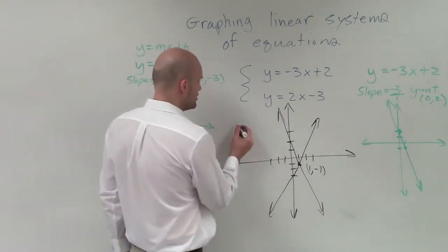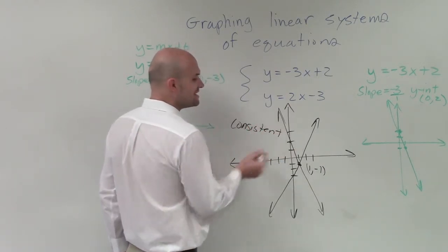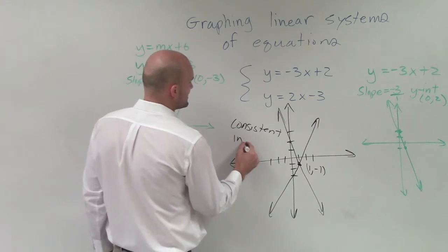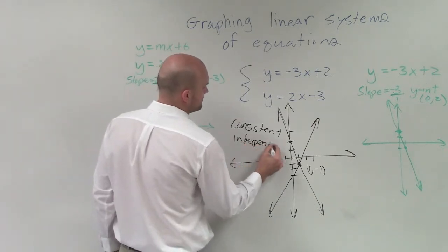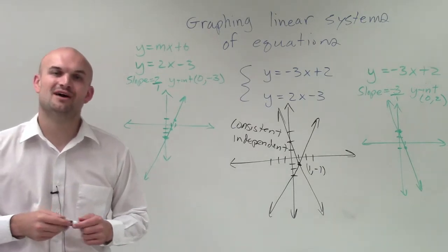Since they intersect, we know that my solution is consistent. And since they intersect at one point, it is independent. So there you go, ladies and gentlemen. That's how you solve your linear system of equations. Thanks.